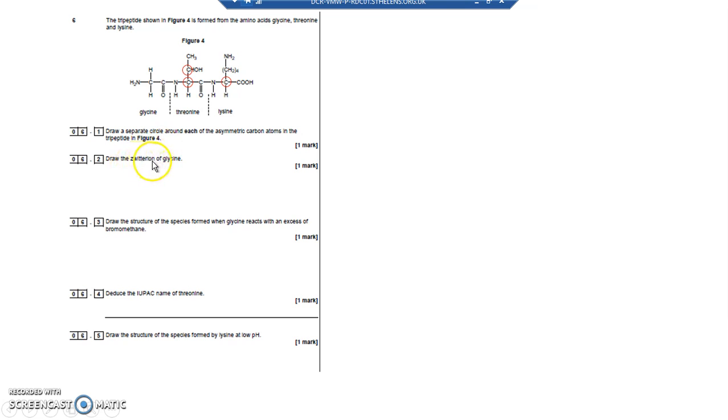Draw the zwitterion of glycine. You can work out what glycine is because it's all of this and this CO has been a COOH. You'd also get it from your data book. It looks like this: NH2-CH2-COOH. That's glycine.